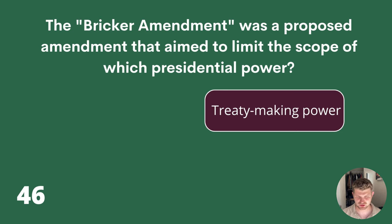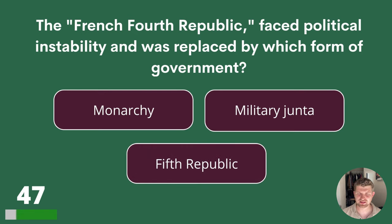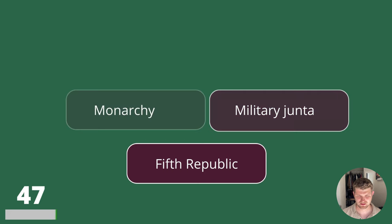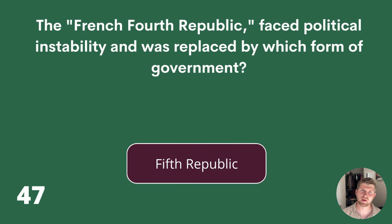Question 47. The French Fourth Republic faced political instability and was replaced by which form of government? Monarchy, Military Junta or Fifth Republic? The answer is Fifth Republic.